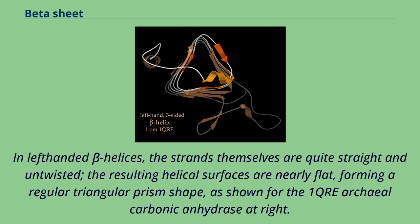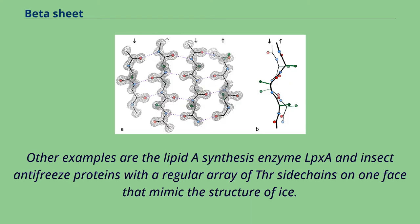In left-handed beta helix, the strands themselves are quite straight and untwisted. The resulting helical surfaces are nearly flat, forming a regular triangular prism shape, as shown for the 1QRE archaeal carbonic anhydrase at right. Other examples are the lipid synthesis enzyme and insect antifreeze proteins with a regular array of threonine sidechains on one face that mimic the structure of ice.